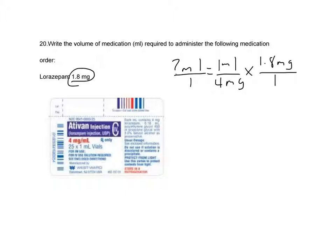Okay, what can we cancel out? Milligrams, milligrams. We want milliliters over here. We have milliliters over here. So that's going to leave us with 1 milliliter times 1.8 divided by 4.